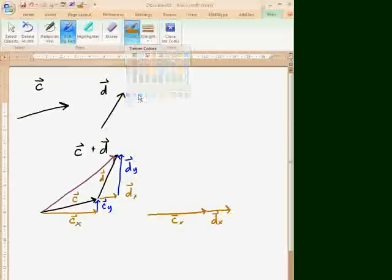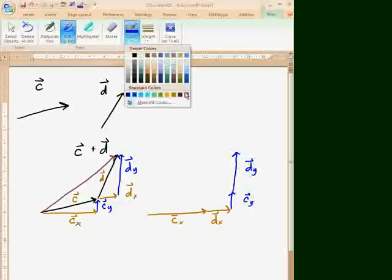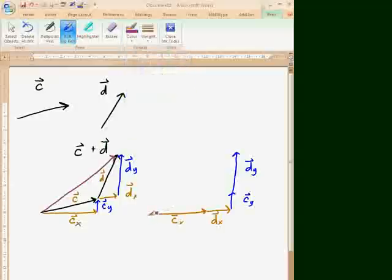And then I do the same thing with my Y vectors, so I'm going to take my CY and the DY, right? And if I draw the resultant vector for that, it's the same resultant vector as I had right here.